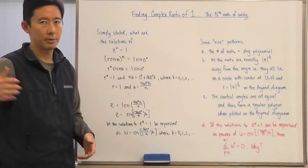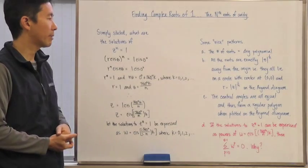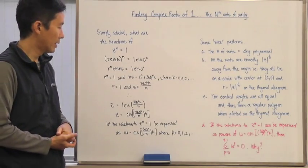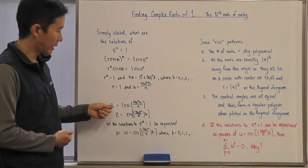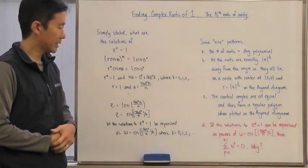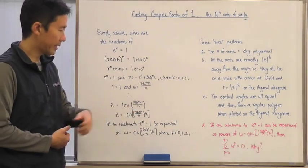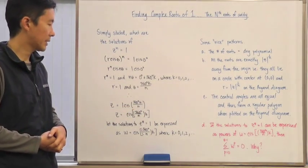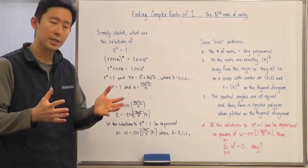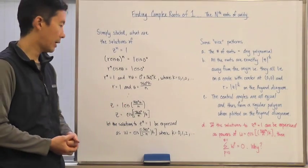Now we know that z then is going to be equal to 1·cis(360 degrees times k divided by n). I'm just going to write it slightly differently - I'm going to take the 360 degrees divided by n first and then multiply it by k.